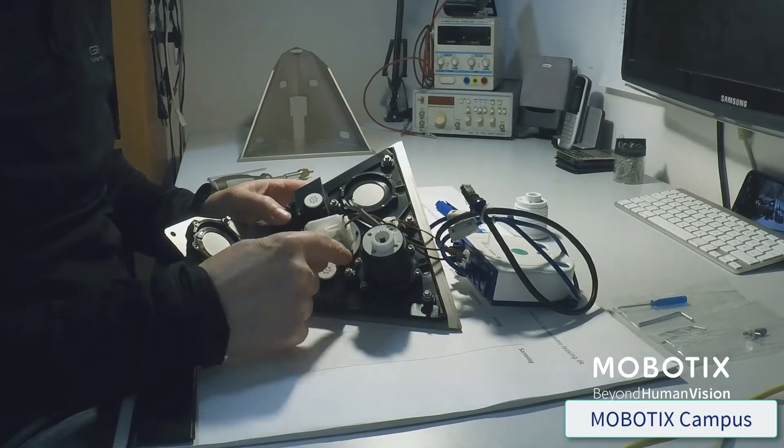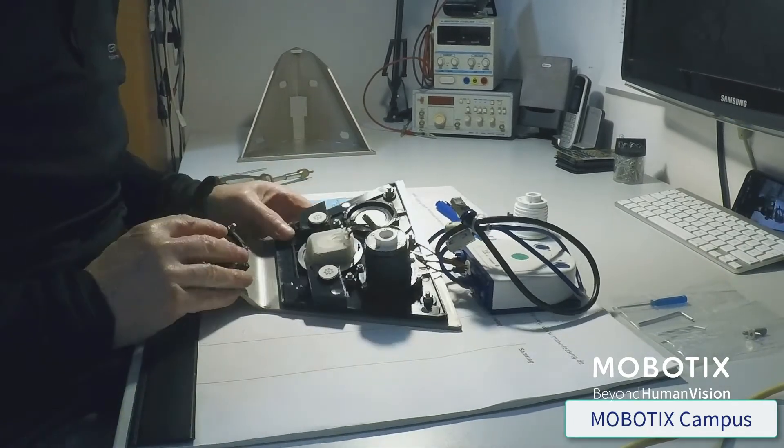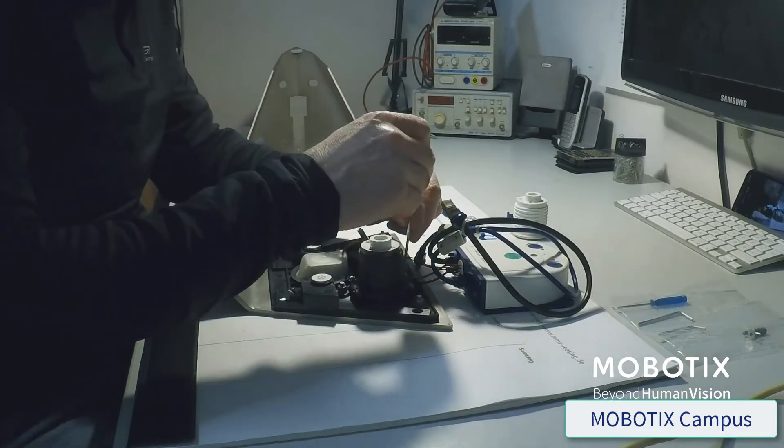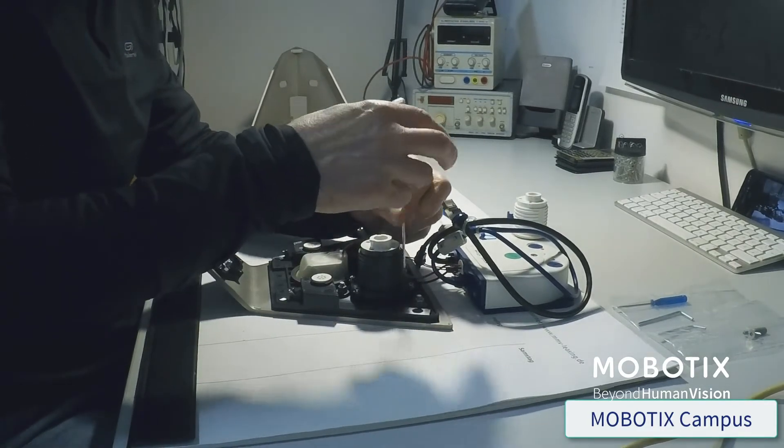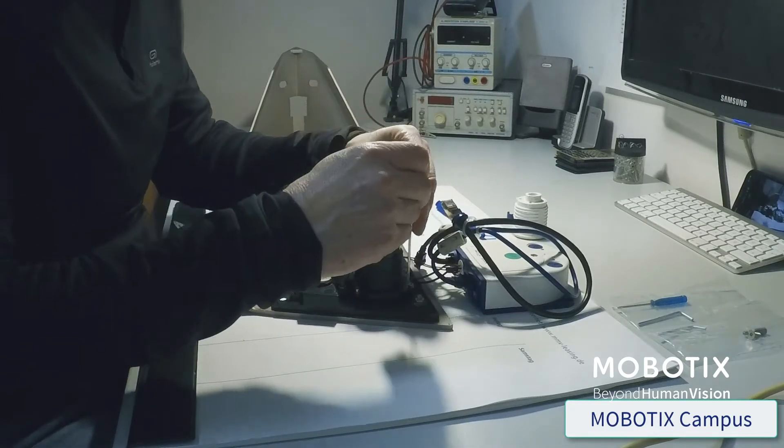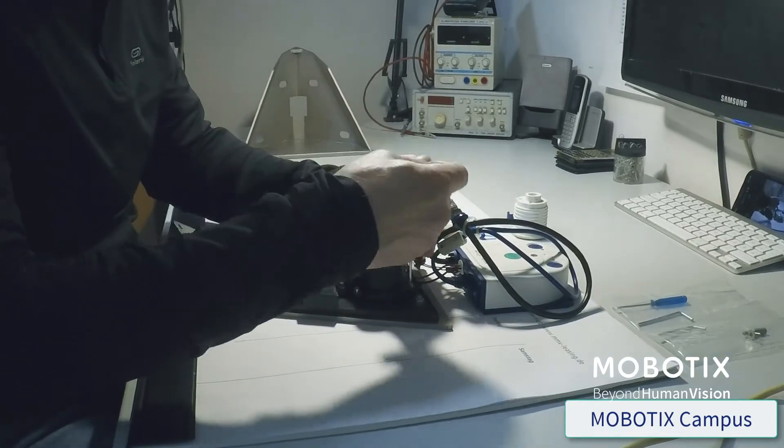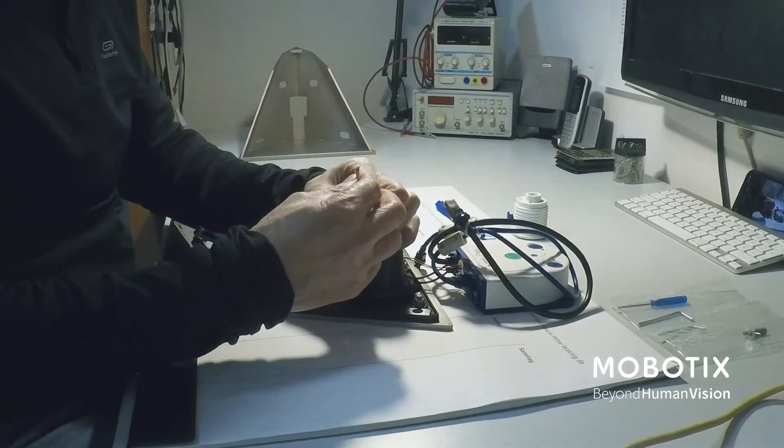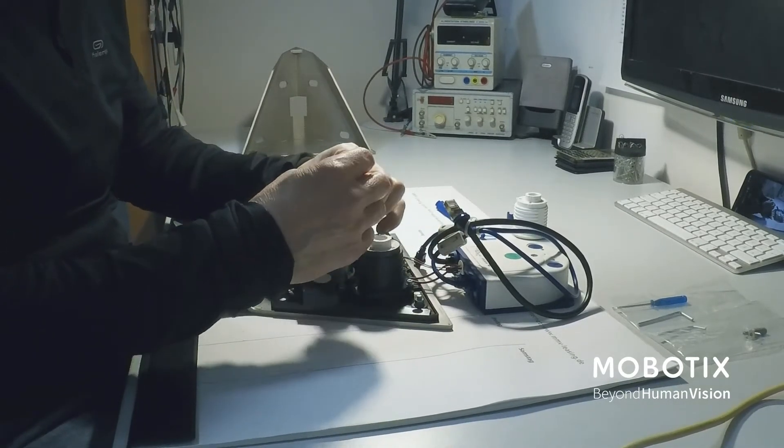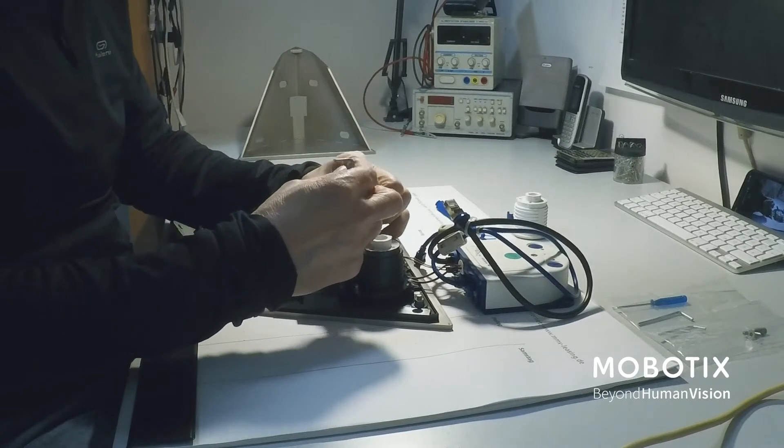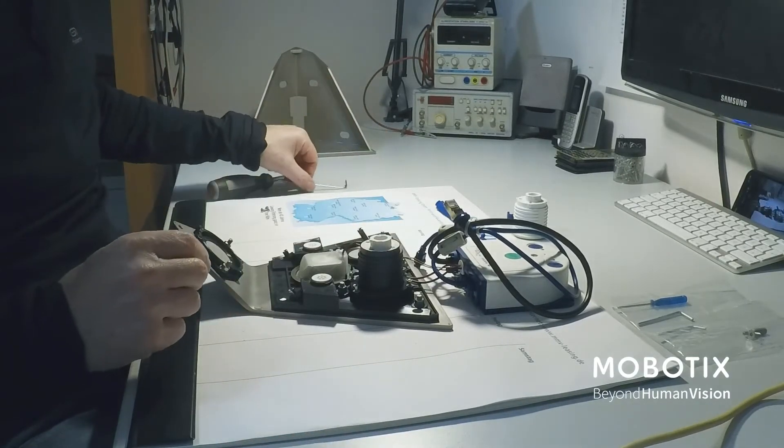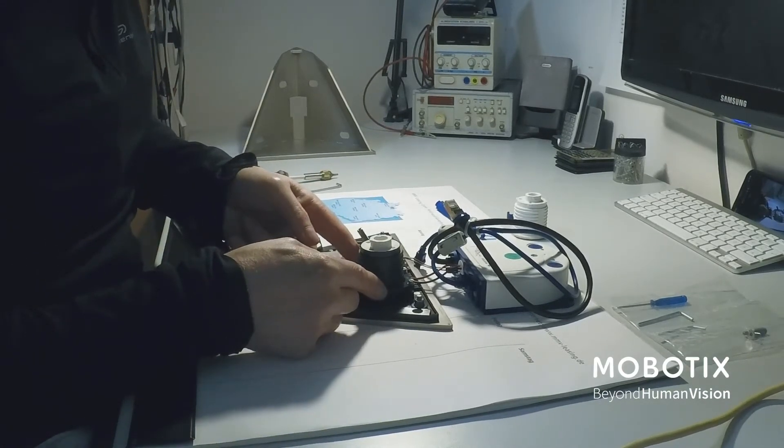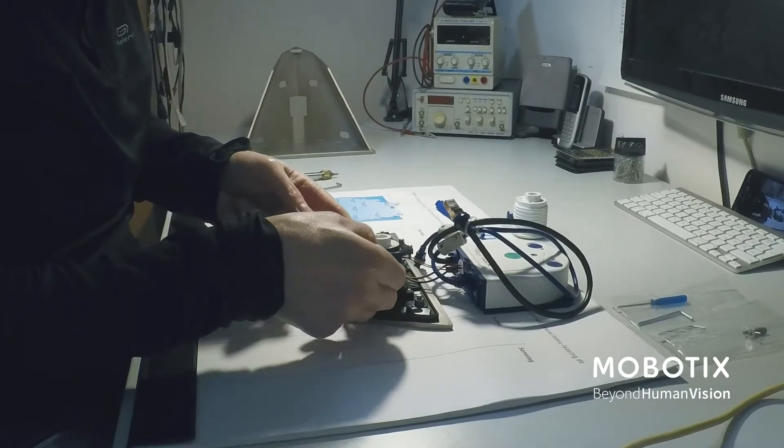And the next step is that we just need to open now these four screws: one, two, three, four. Now this is released and we can put this ring away. So this plastic ring what holds our image sensor.